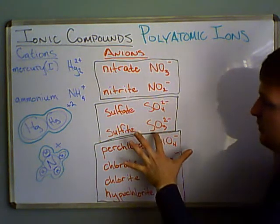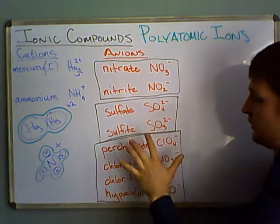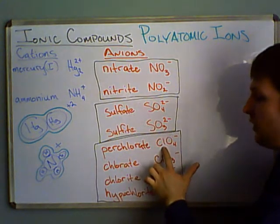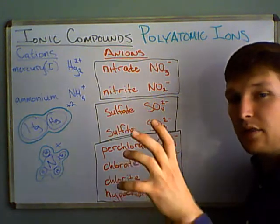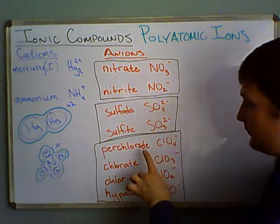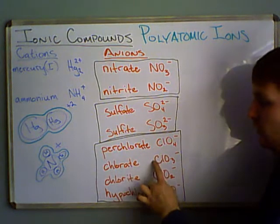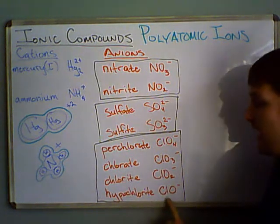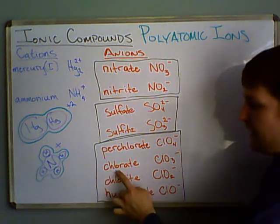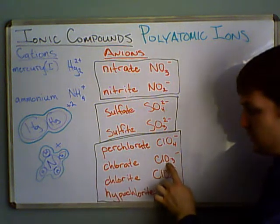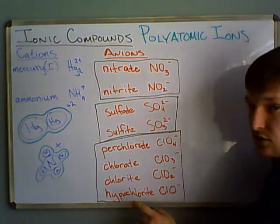The nitrate and nitrite are based on nitrogen, and sulfate/sulfite are based on sulfur. Now, chlorine also has a bunch of polyatomic ions with oxygen on it — it can form 4 different ions. In the middle we have chlorate, which has 3 oxygens, and chlorite, which has 2 oxygens.